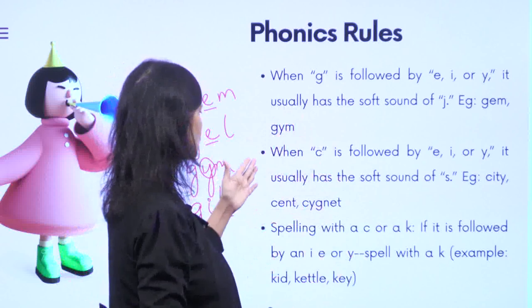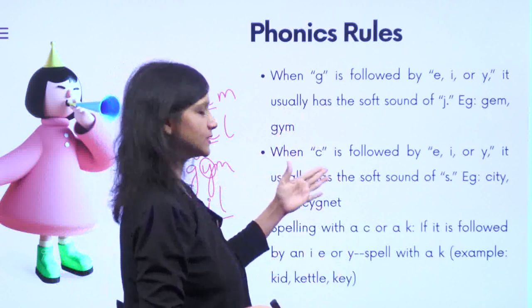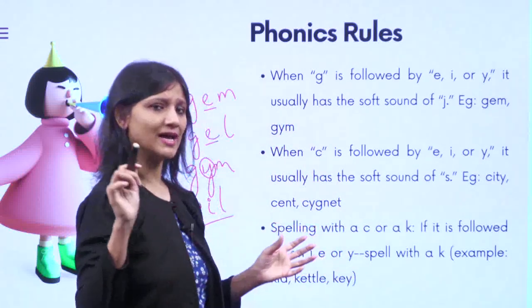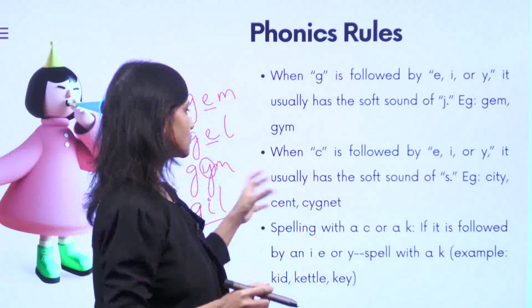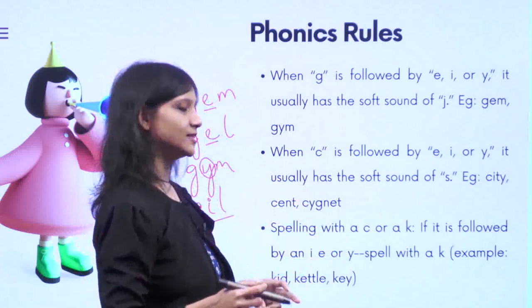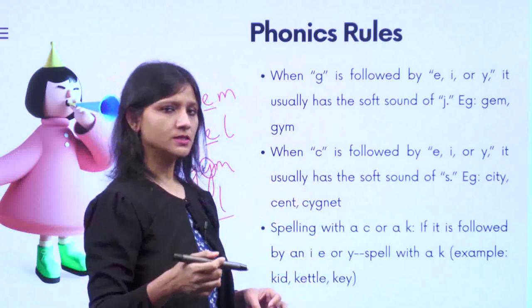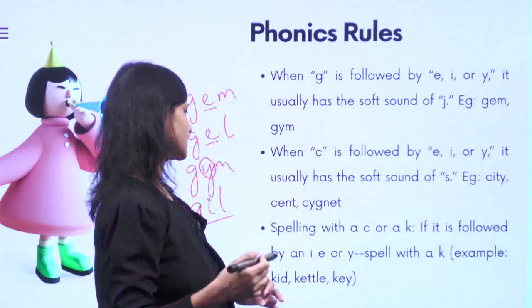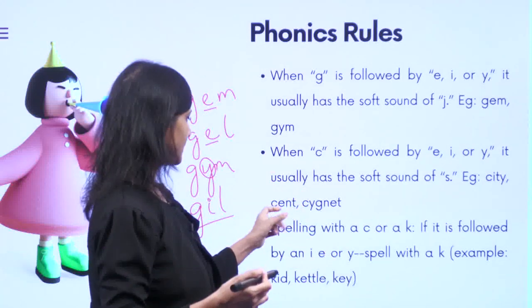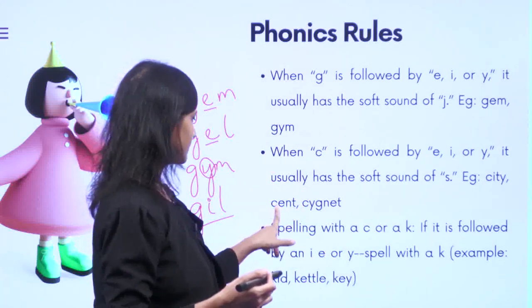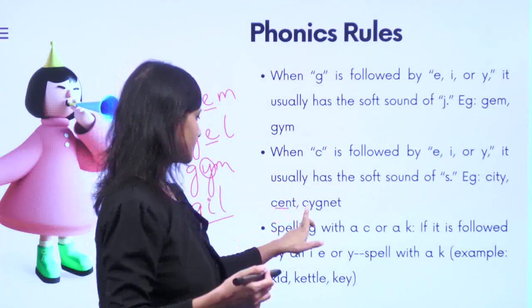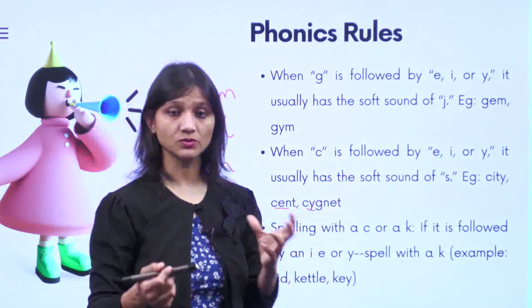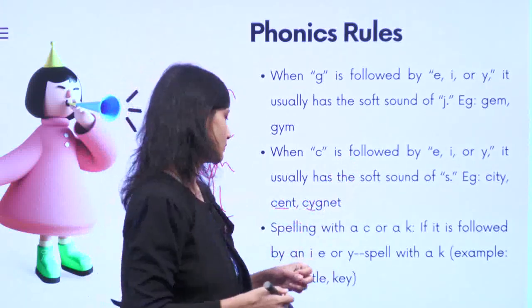Rule six: the same applies to C. When C is followed by I, E, or Y, the soft sound of C is produced — as in 'city', 'ciliary', 'sent', 'cygnet'. You can see there is an E or I following the C in these words, so the soft sound of C gets produced.